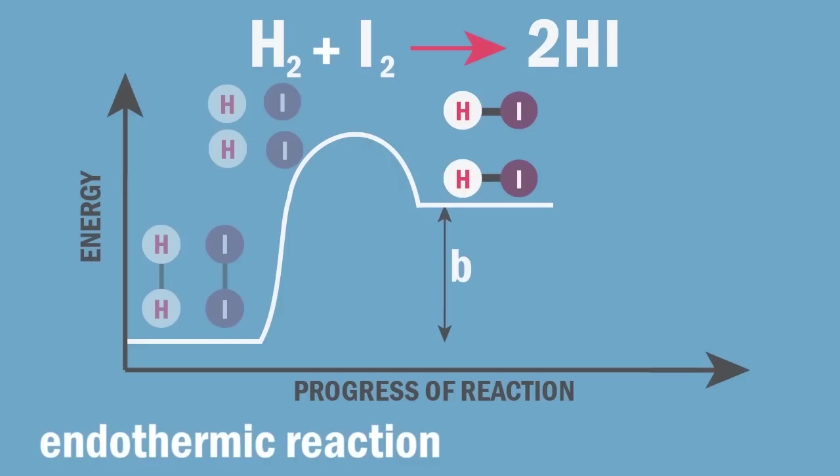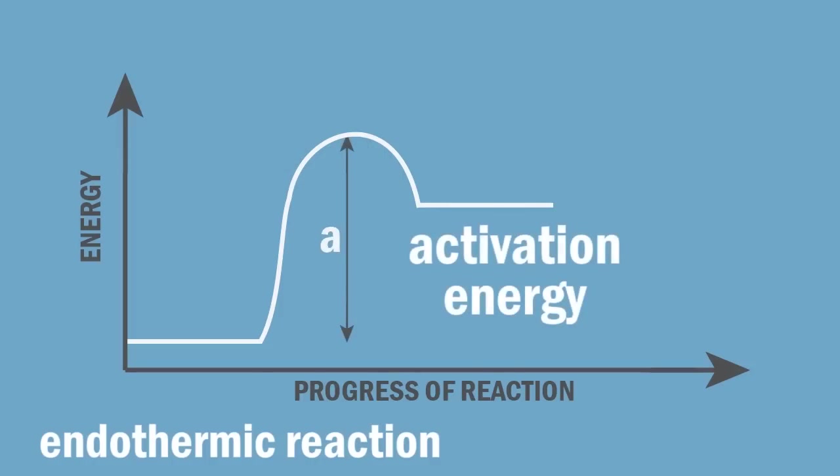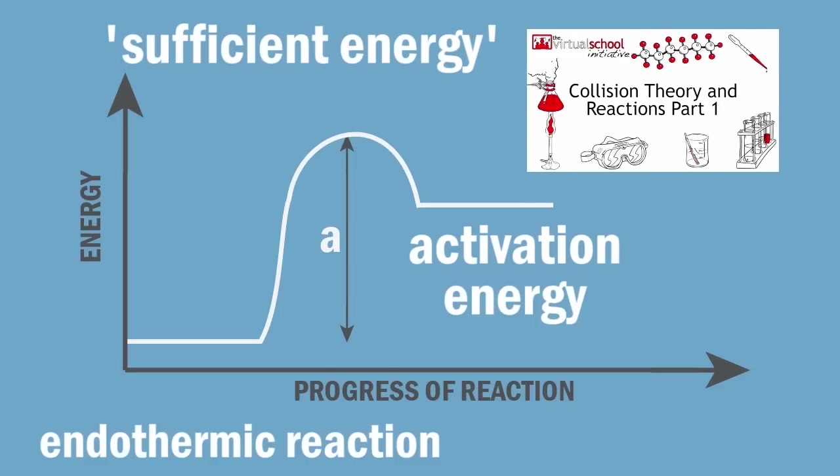B is the net energy taken in, delta H, during the reaction. This is the energy difference between the energy taken in to break the bonds in the reactants and the energy given out when the new bonds make to form the products. The activation energy A is the sufficient energy mentioned in the video collision theory and reactions 1.